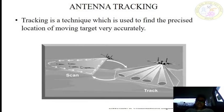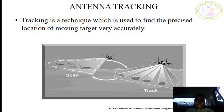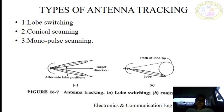After acquiring targets through an appropriate scanning method, it is also necessary to locate the following movements of targets very accurately. Tracking is a technique which is used to find the precise location of targets. There are three methods of tracking: lobe switching, conical scanning, and monopulse tracking. In today's class, we are going to discuss lobe switching, which is an interesting topic.